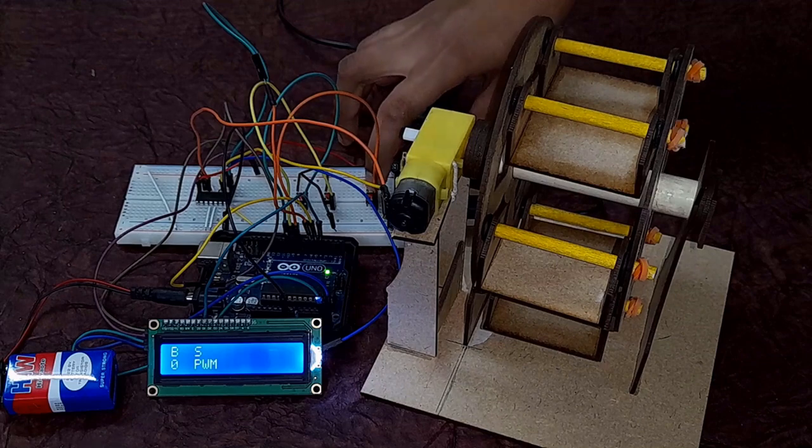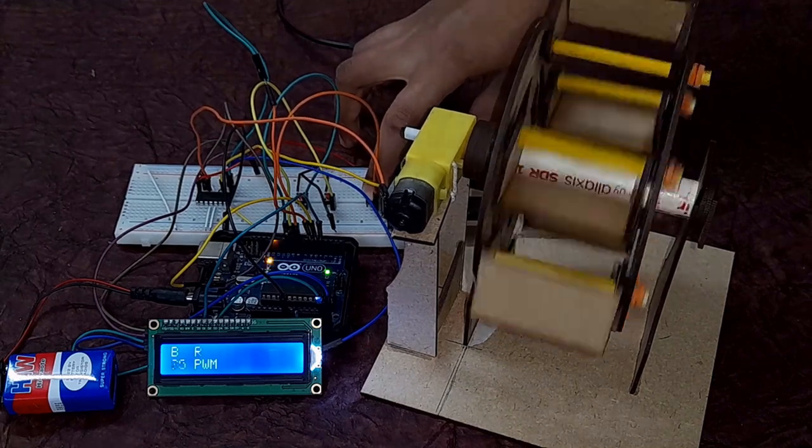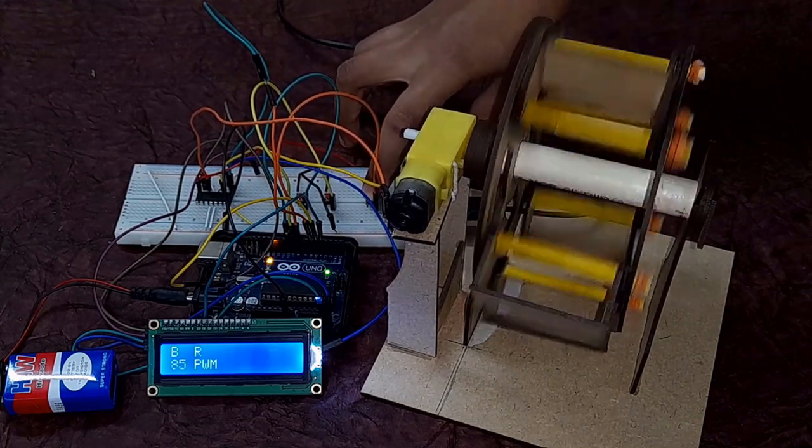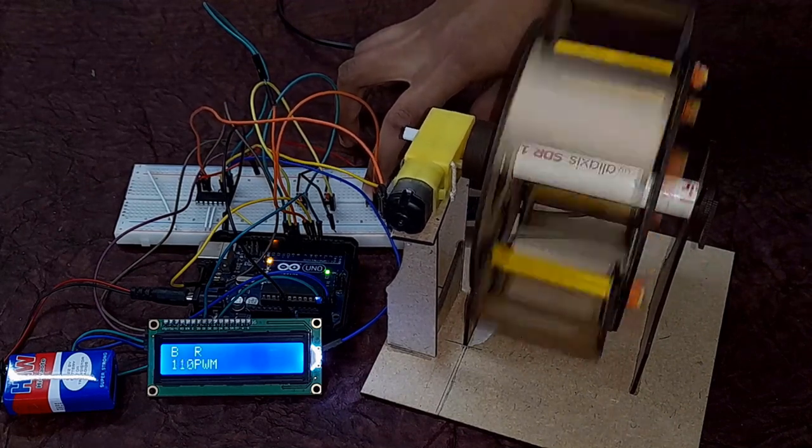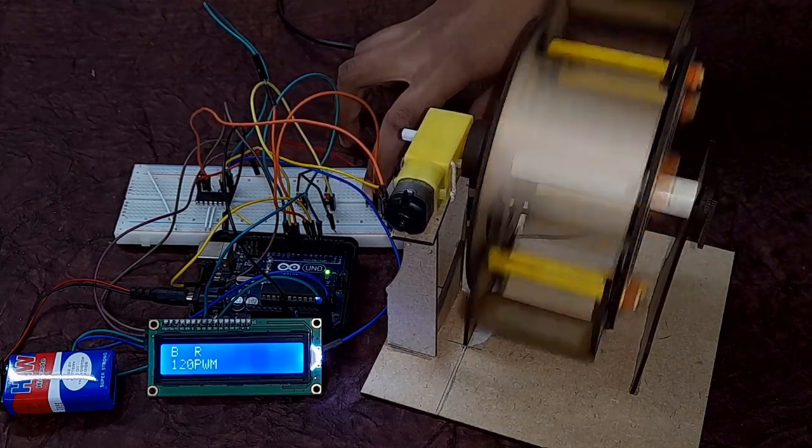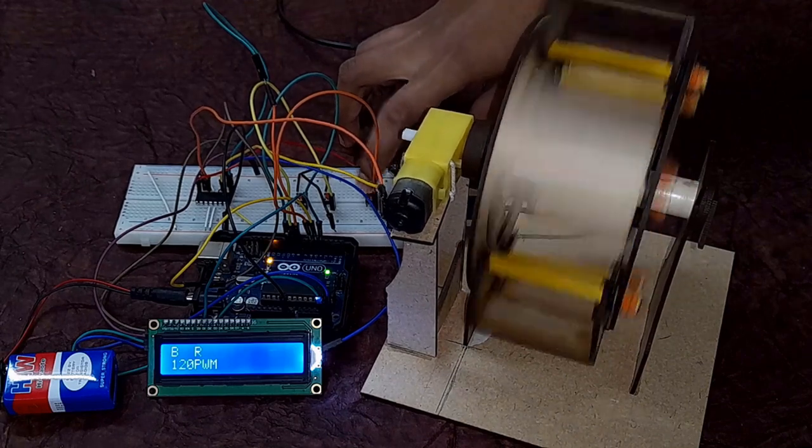Now we flip the direction to back and when we ramp up the speed the motor spins in the opposite direction. Again the speed starts from 75 and goes right up to 120. No further increase.